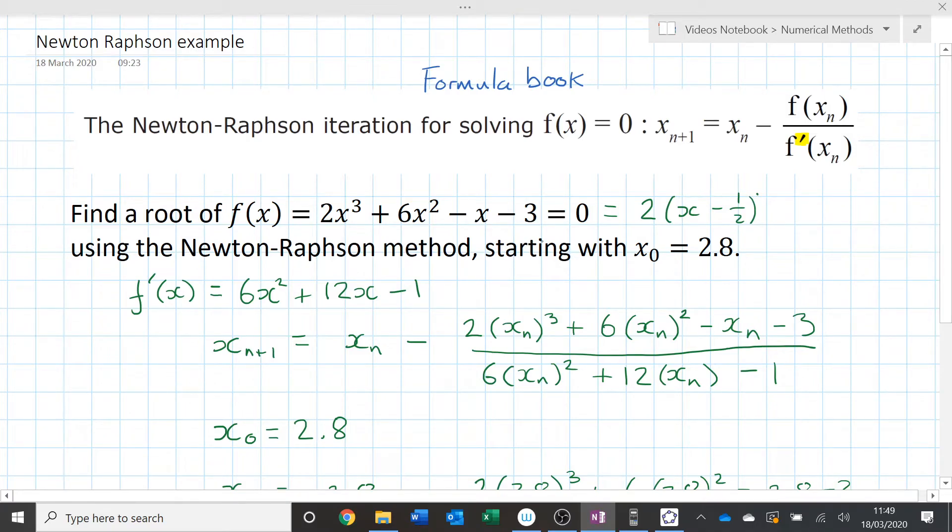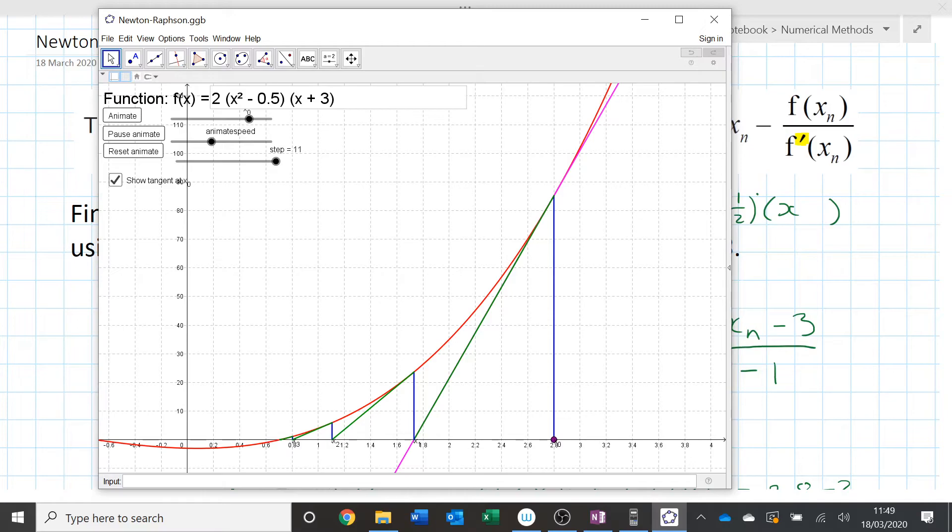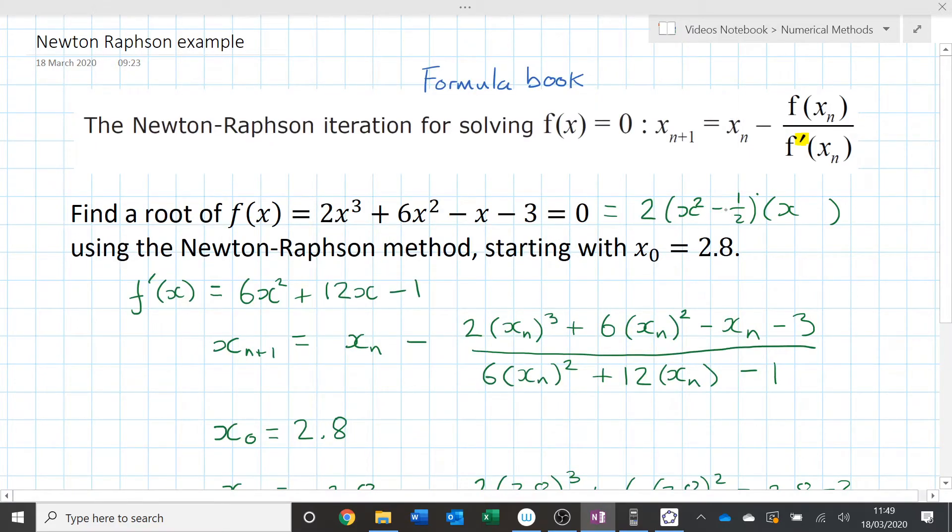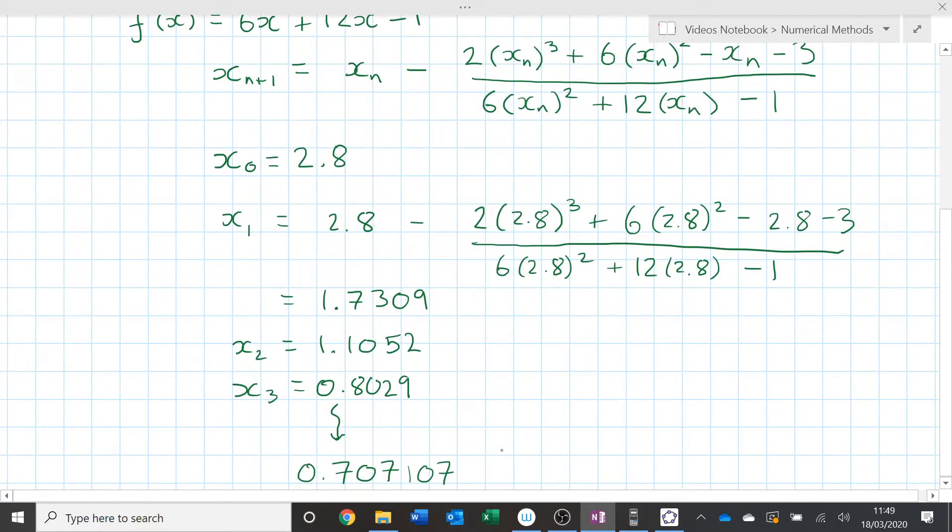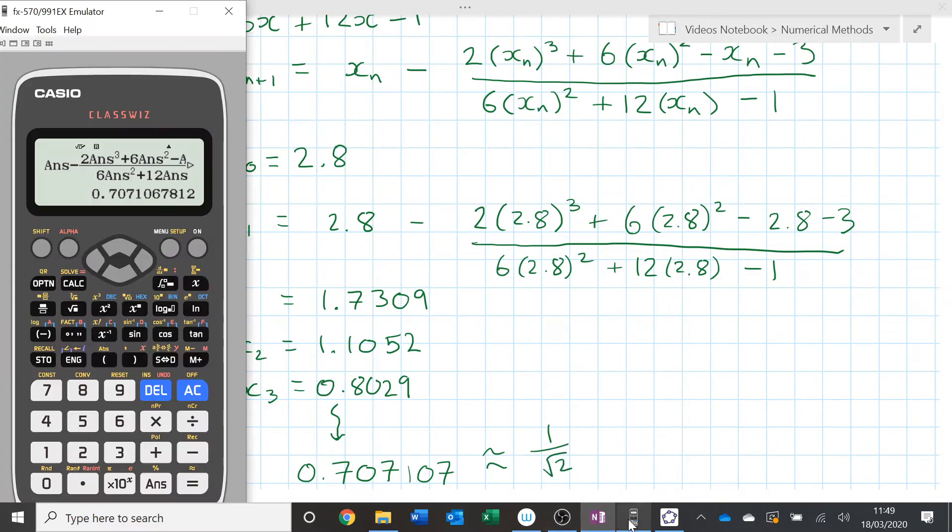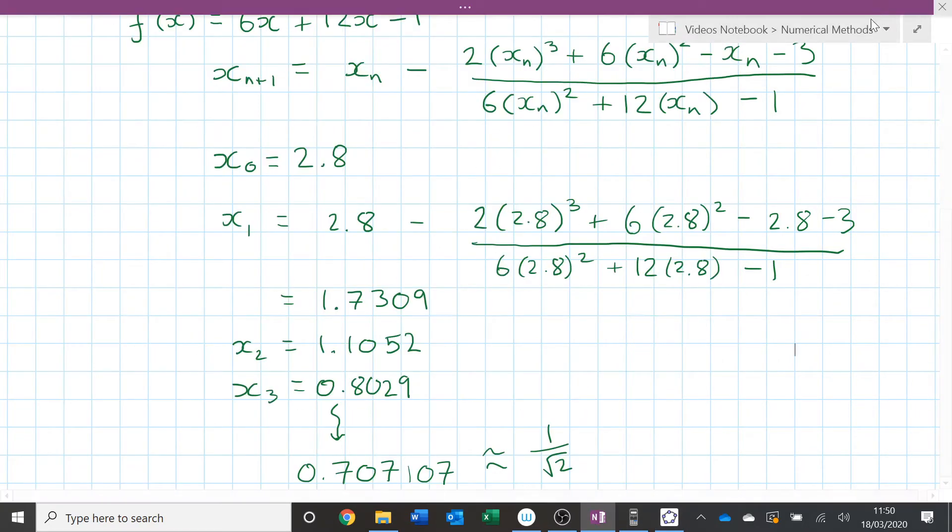So it should be that since the root of that equation is that, this should be roughly equal to 1 over root 2. So let's have a look what that is. 1 over root 2 is that. 1 over the square root of 2 is equal to that. And there we go. It has found it. So we have used Newton-Raphson. It was fairly fast in finding that. It kind of bounced up and down. And it zoomed in on there.